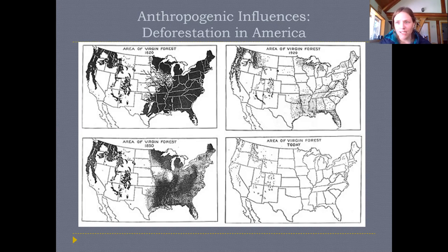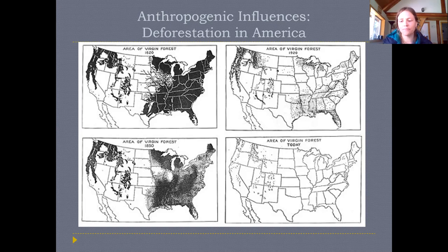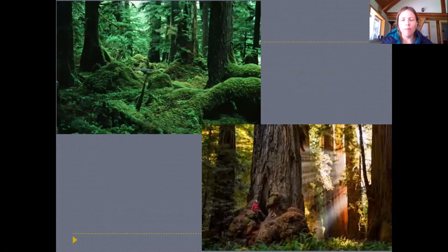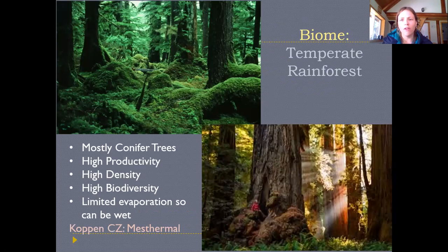Today, virgin forests really only exist in small pockets, normally national and state parks. There are still forests in parts of the country not shown as virgin forests, but these have regrown after being cleared for agriculture or are actively managed for wood products — they're not necessarily the natural forest ecosystems we would have seen in the past.